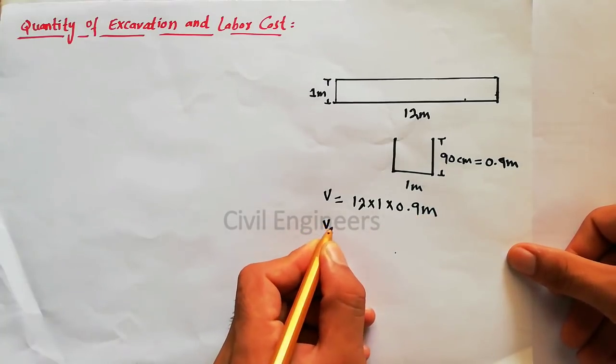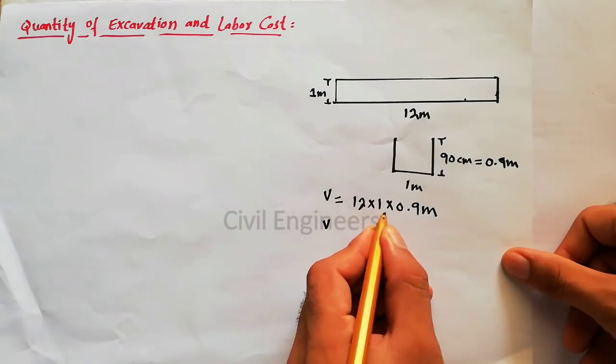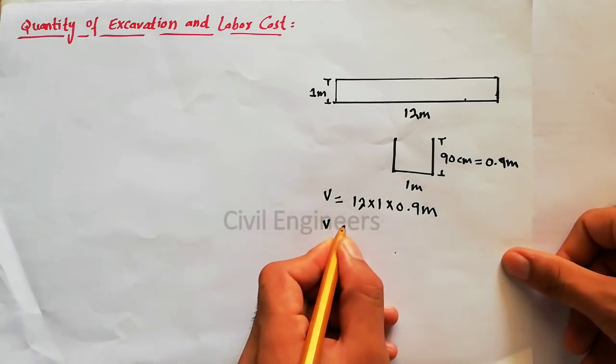So the volume will come: 12 multiply by 1 and multiply by 0.9, so it will come 10.8 cubic meters.